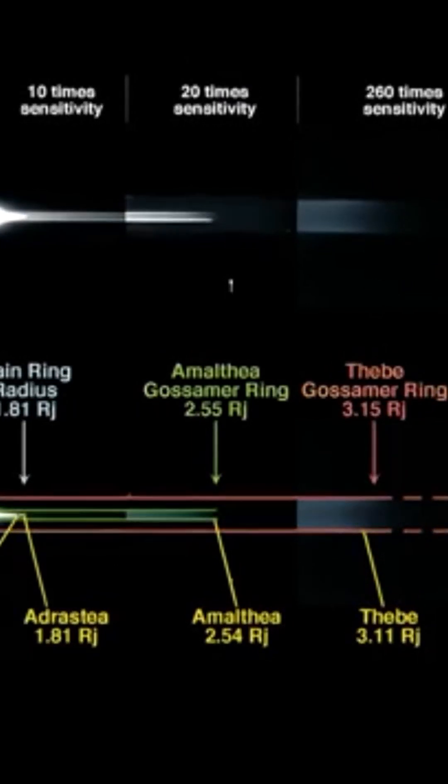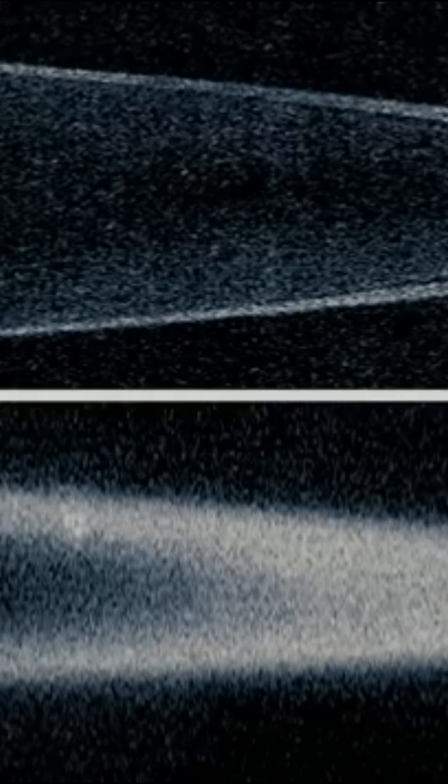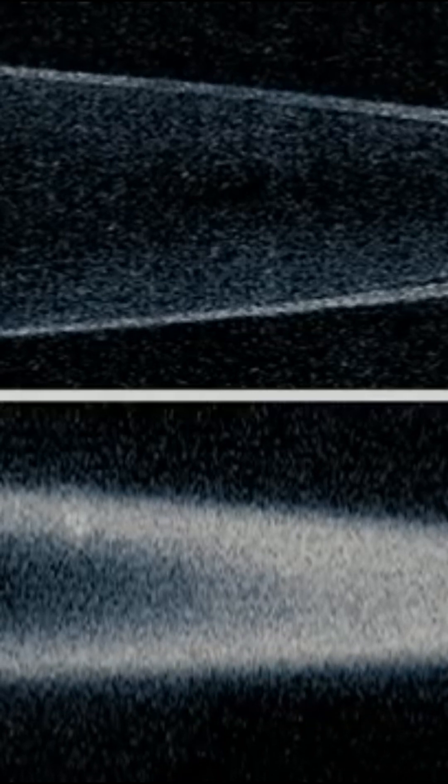The main ring, only 30 kilometers or 20 miles thick, probably composed of dust from the Adrastea and Metis satellites. It measures around 6,000 kilometers or 3,800 miles wide.